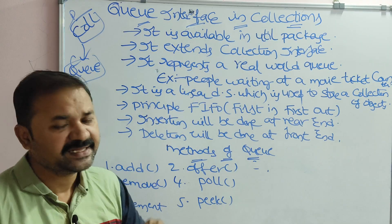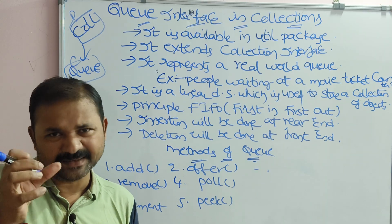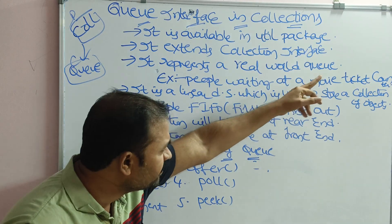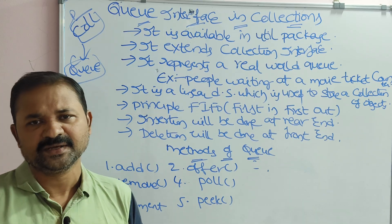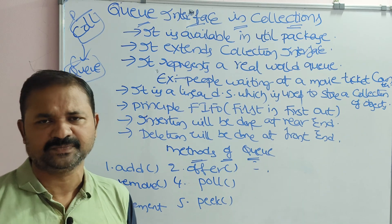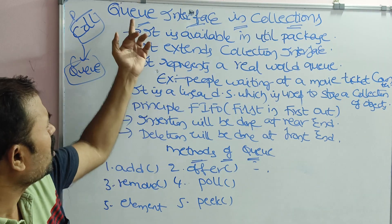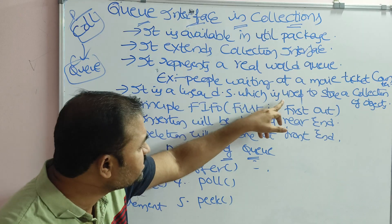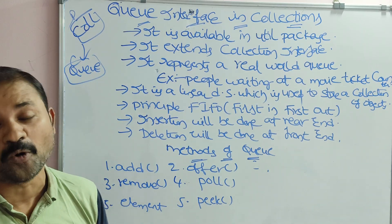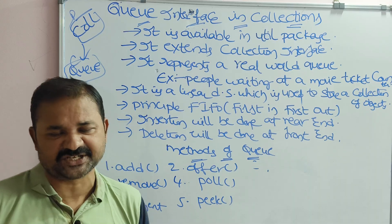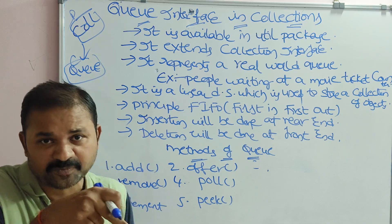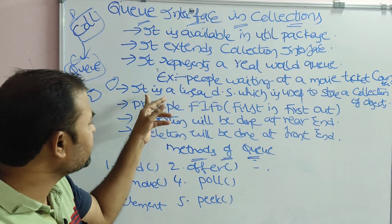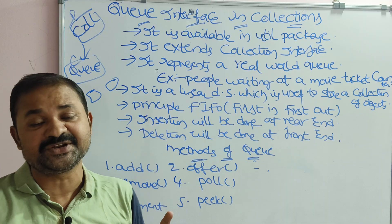The Queue interface represents a real-world queue. For example, people waiting at a movie ticket counter or a line of people waiting at the bank — any line of people represents a queue. A Queue is a linear data structure used to store a collection of objects, where all objects are arranged in a linear fashion, one by one.